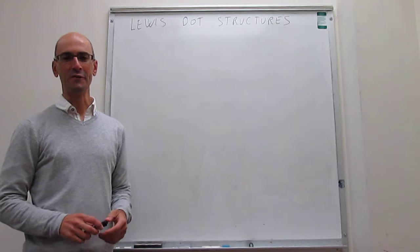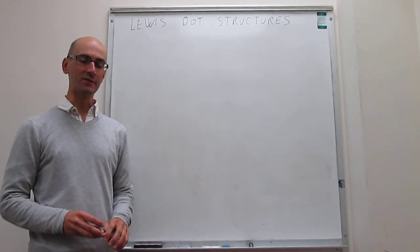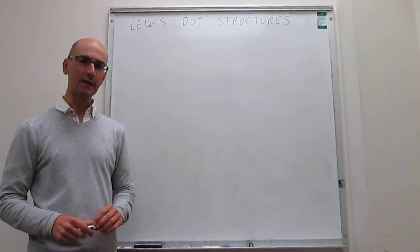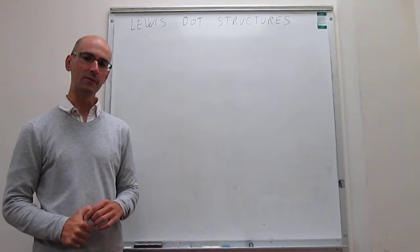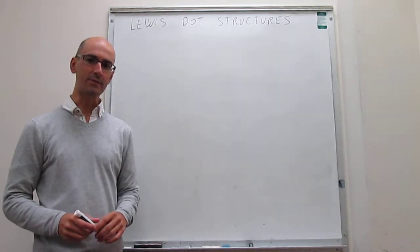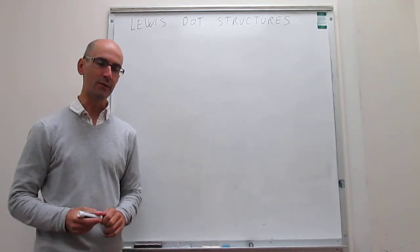In this video we're going to further our understanding of Lewis dot structures by drawing the structures of ozone and the nitrate ion. Let's get started with ozone.